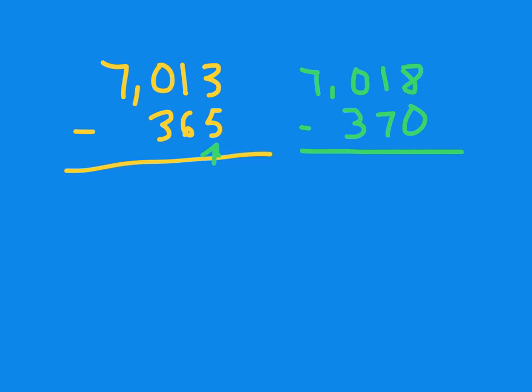To change that 7, to get rid of the 7, we are going to add 30 to it. So here's where I'm working now, and I'm going to add 30 to both of my numbers. So 7,018 plus 30 more is 7,048. 370 plus 30 more gets me to 400. Now I have a much easier subtraction problem to do.